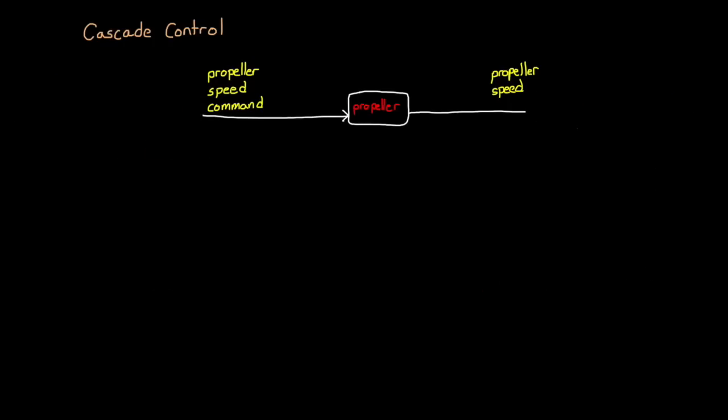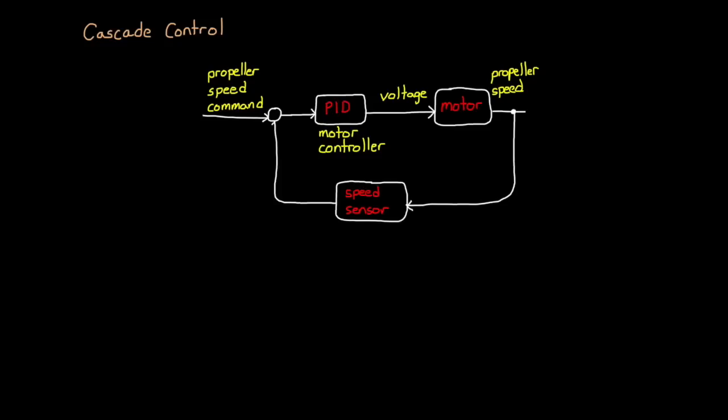But now let's focus in on the propeller itself. Again, the propeller command is the input, and the resulting speed is the output. But if you recall videos 5 and 6 in this series, we talked about motor control, and what is a propeller other than a motor with a fancy bit on one end. So instead of a single block labeled propeller, this is actually a small feedback loop itself. There's the command, which goes through its own comparator, and the resulting error is fed into a PID controller. The output of the controller is voltage, which is applied to the motor, causing the motor to spin. The motor speed is measured by a sensor and fed back into the comparator.